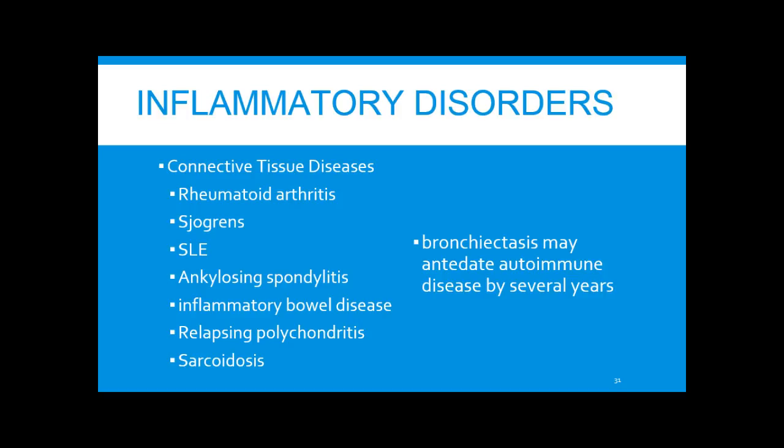Connective tissue diseases are important to consider, because bronchiectasis may actually antedate the autoimmune disease by several years — meaning pulmonary findings may be the only findings present. These include RA, Sjögren's, lupus, ankylosing spondylitis, IBD, relapsing polychondritis, and sarcoidosis.